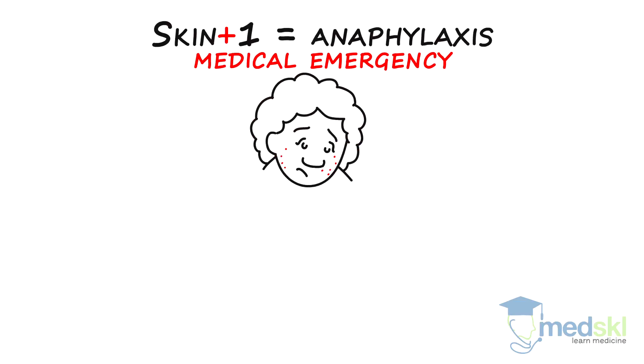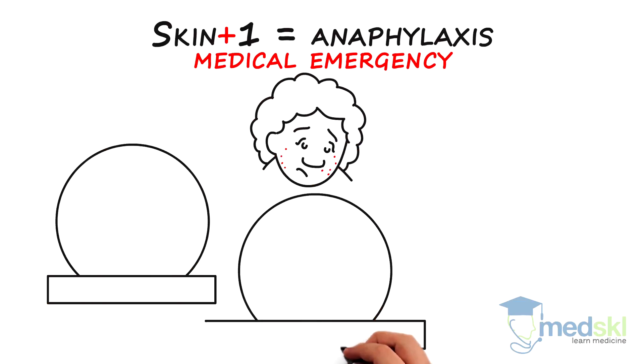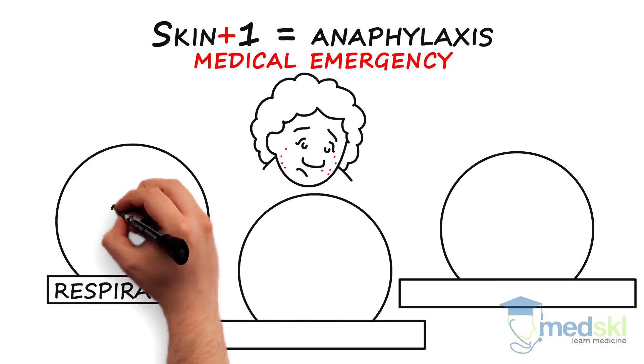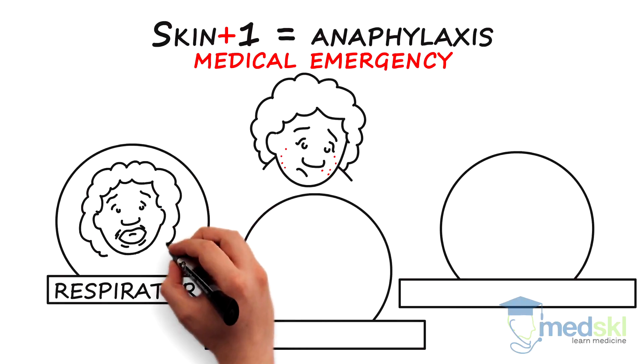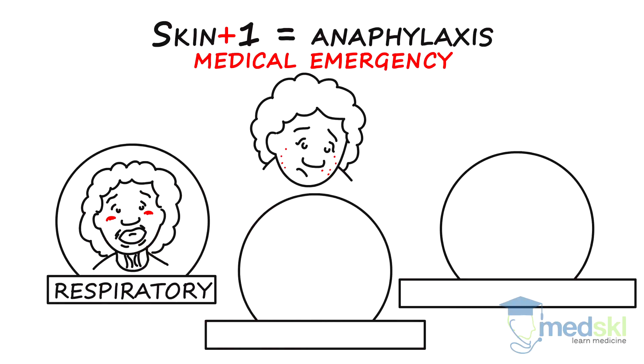The other systems, or the plus one, that are commonly involved include the respiratory system, which can present with upper airway involvement with stridor, tongue, lip or neck swelling, or lower airway symptoms presenting with wheezes, cough and shortness of breath. Airway obstruction is the number one cause of death from anaphylaxis.